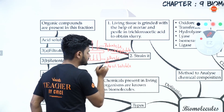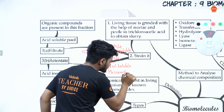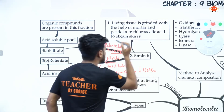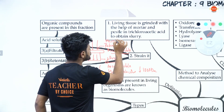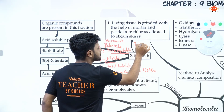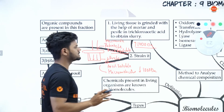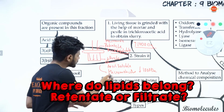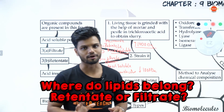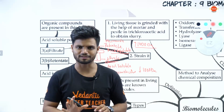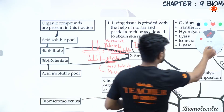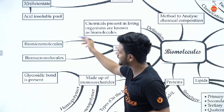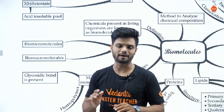Whatever we find in the filtrate are called micromolecules, because their size is less than 1000 daltons. The retentate contains macromolecules, because their size is more than 1000 daltons. Simple examples of macromolecules are nucleic acids, proteins, and complex carbohydrates. In the filtrate we find simple carbohydrates, amino acids, and nucleotides. Based on this, biomolecules are divided into two types: bio micromolecules and bio macromolecules.